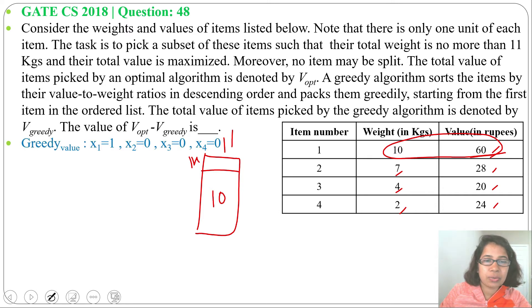So x1 equals 1, x2, x3, x4 are 0. We are not choosing item 2, item 3, and item 4. We are just choosing item 1, so x1 is 1.